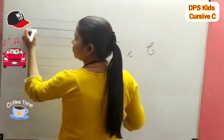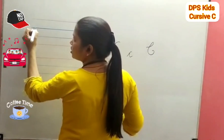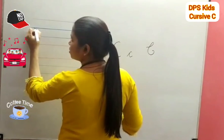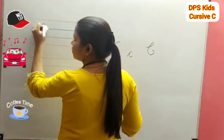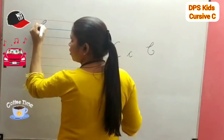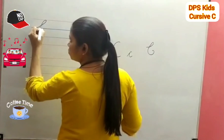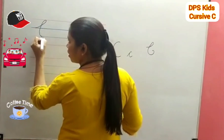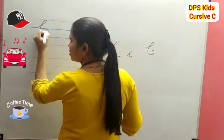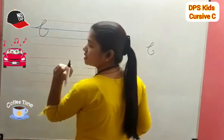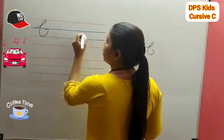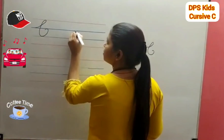Now put your pencil here on the second line and go upside up to the red line like this. Now come to the third line, now go to the second line like this. C — now come to the side.